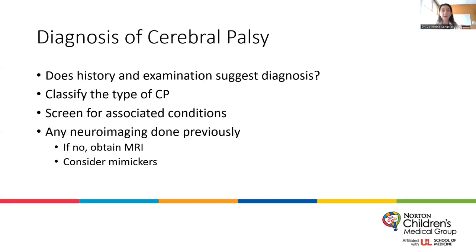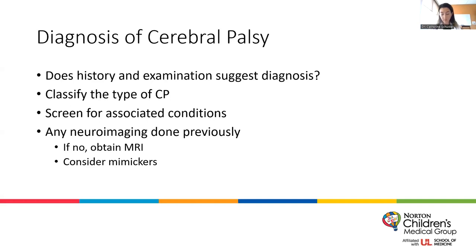Once we've made the diagnosis — history and examination suggest cerebral palsy and we don't think there's a progressive or degenerative issue — we want to classify the type of CP and screen for associated conditions involving other body systems. We may need to obtain neuroimaging and consider mimickers. Children diagnosed with cerebral palsy early on are commonly on the lower tone side rather than high tone. We can also see developmental delay, ophthalmological conditions, speech-language delay, oral motor issues, feeding and swallowing problems, and seizures.